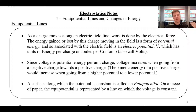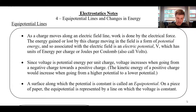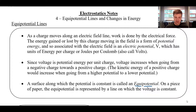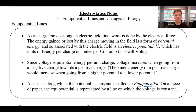If we have a space and we're trying to describe how the potential changes, we're going to use the idea of equipotential lines. Equipotential literally just means equal potentials or equal voltages. So when we draw lines on a piece of paper and it's an equipotential line, it's showing a region of space that has the same potential.